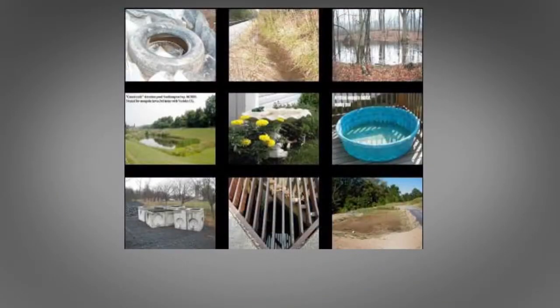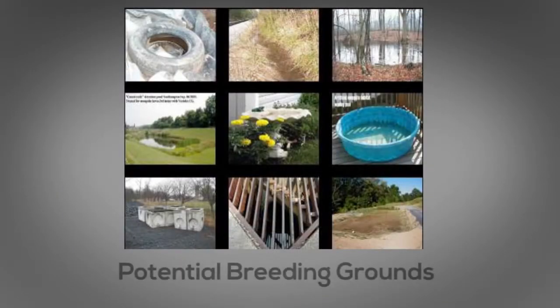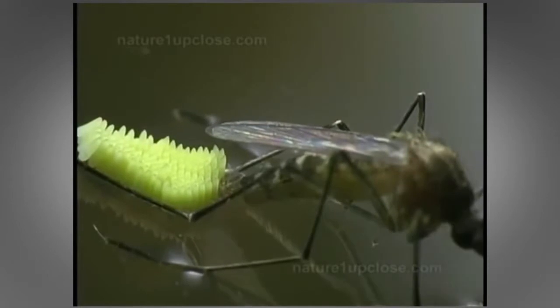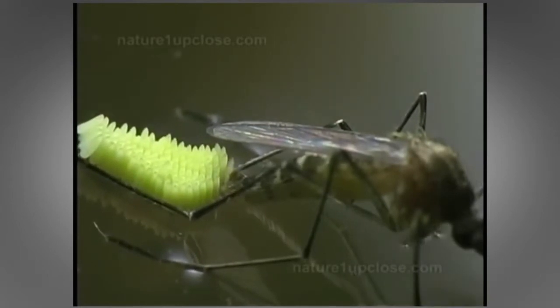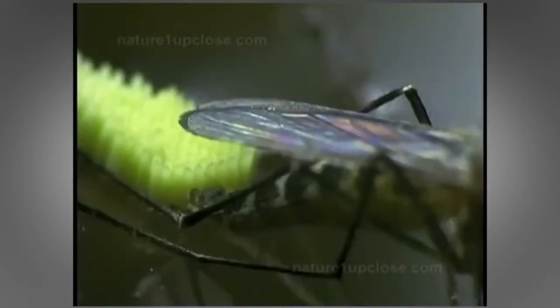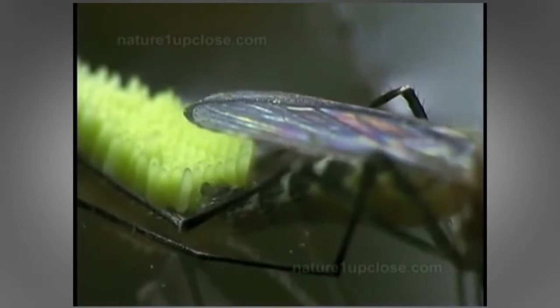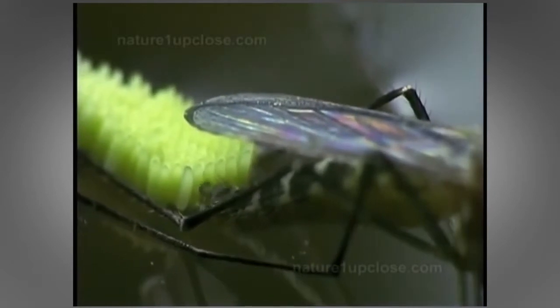The only solution is to destroy mosquito breeding grounds and curb the problem at source. As mosquitoes breathe in stagnant water, I concluded that surface aeration would be the best means of eliminating breeding grounds. It would prevent a mosquito from laying eggs as it can lay eggs only if the water is completely still.